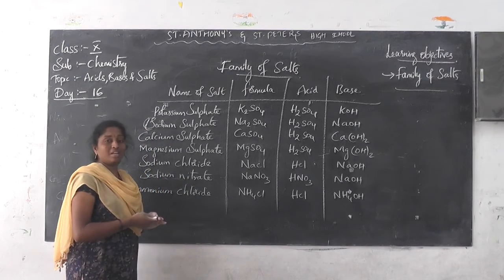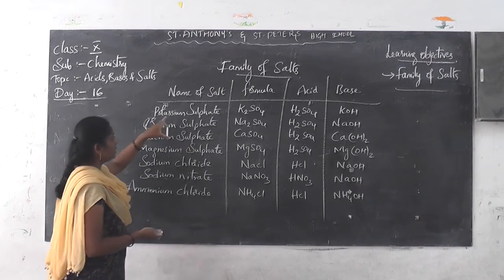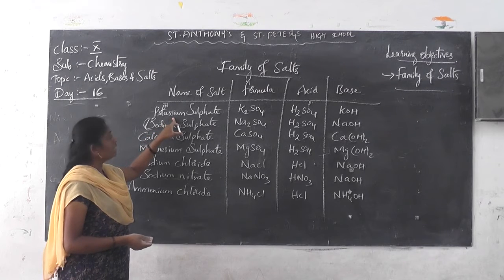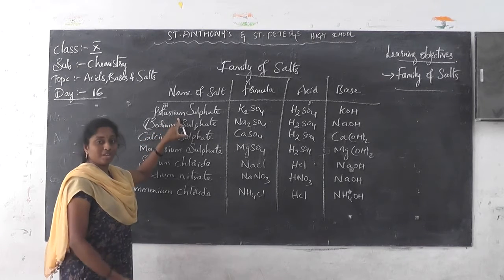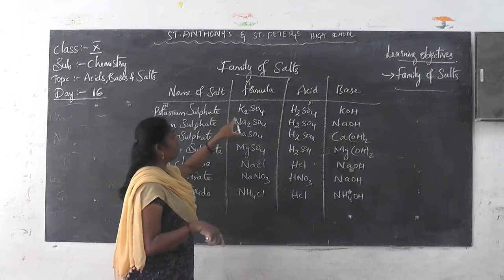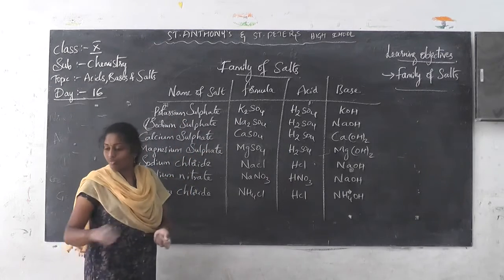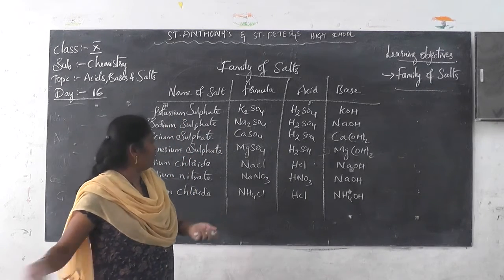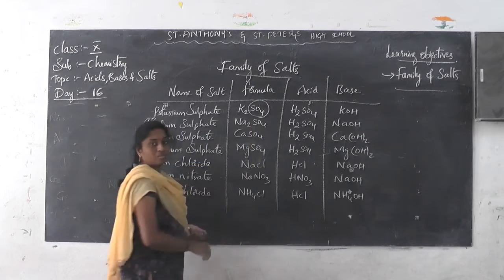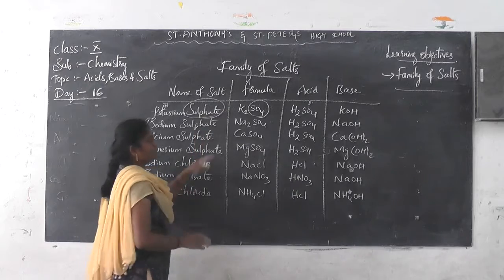Let us look at some examples to understand very clearly about the family of the salt. Now let us take potassium sulphate. The formula of potassium sulphate is K2SO4. It comes under the sulphate family — SO4 indicates sulphate family.